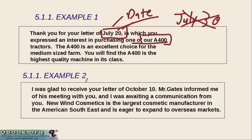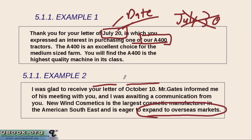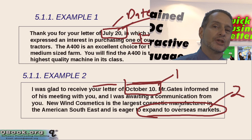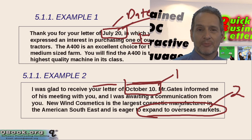Here's example number two: 'I was glad to receive your letter of October 10. Mr. Gates informed me of his meeting with you, and I was awaiting communication from you. New Wind Cosmetics is the largest cosmetic manufacturer in the American Southeast and is eager to expand to overseas markets.' We can see two key things: the date of the inquiry letter, and the topic or subject of the inquiry letter. Inside this first paragraph, we also stay positive and say something good about our company or service. A response letter should be very positive, making your company sound good to the person who wrote the question.